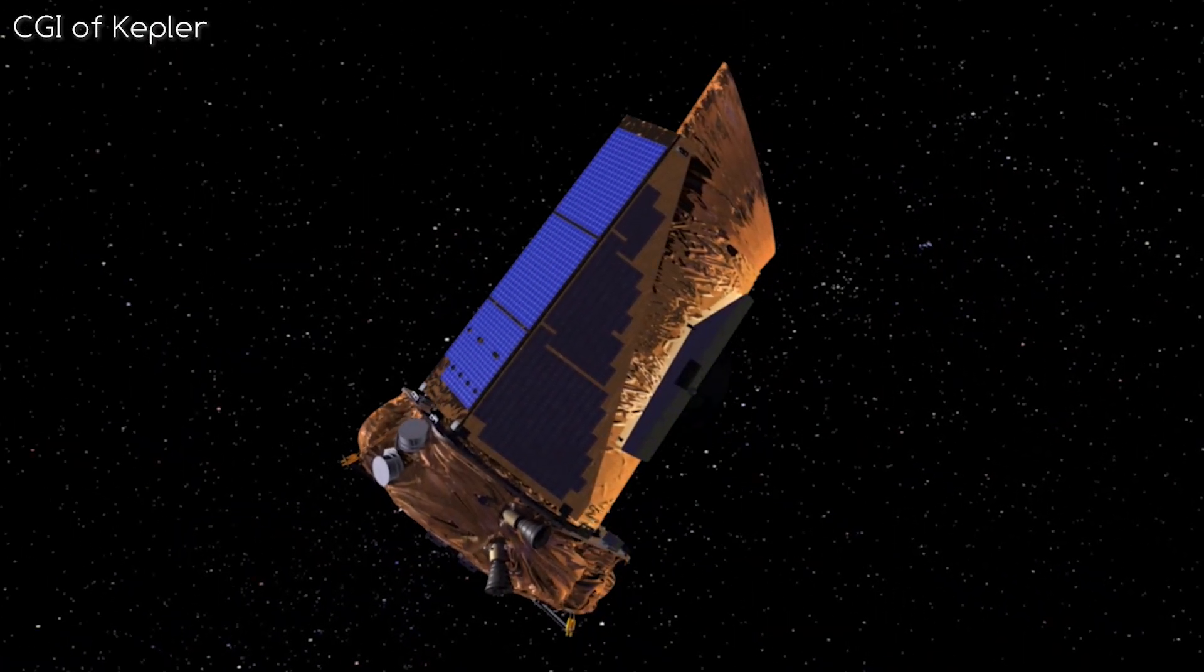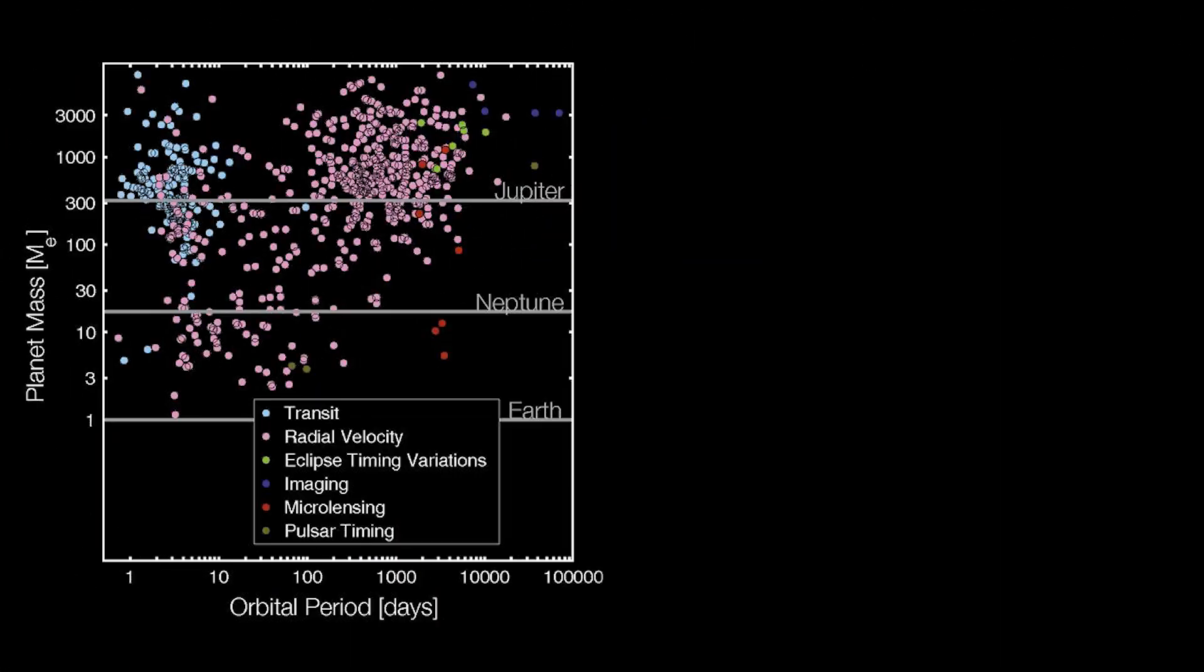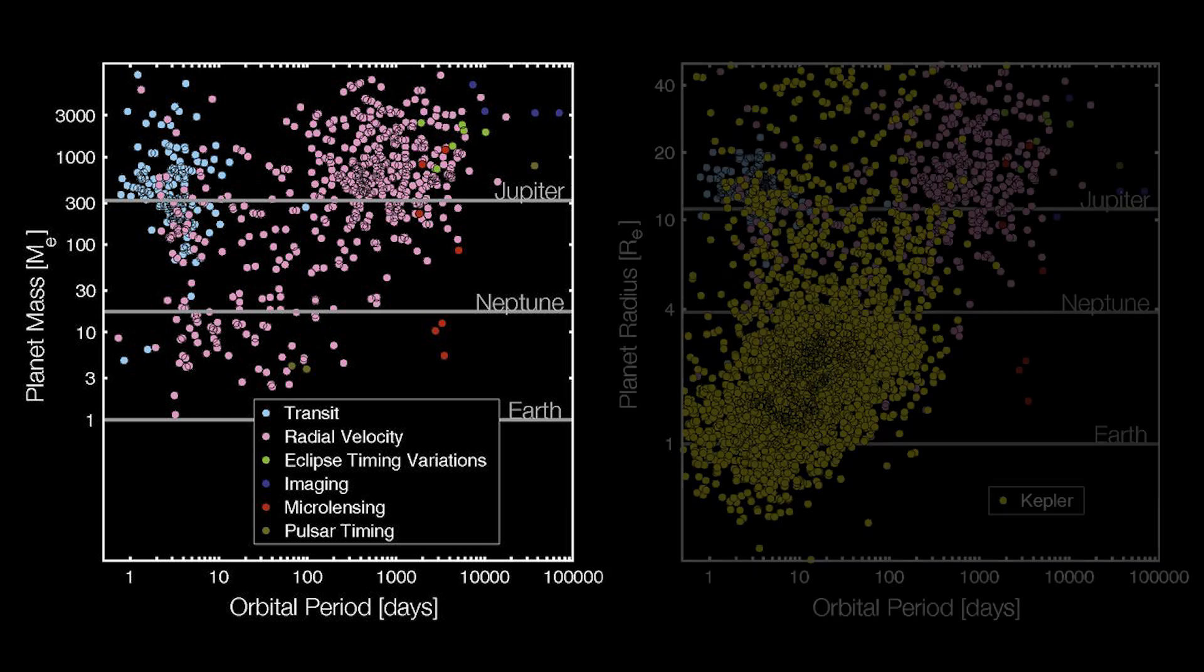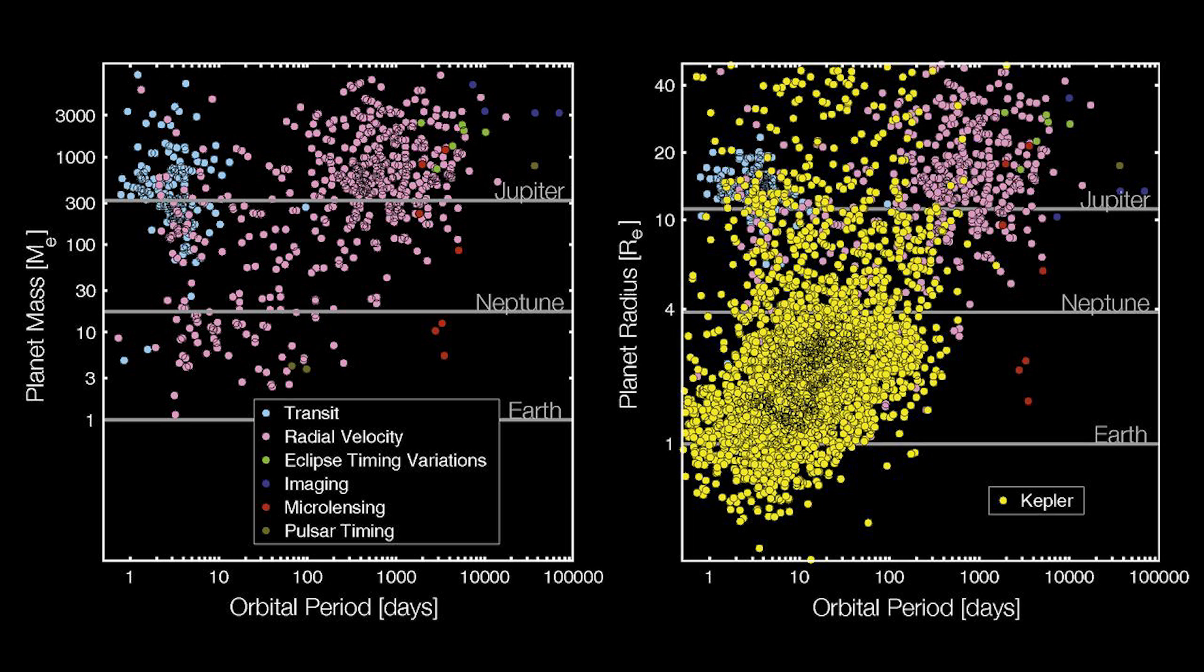Kepler is really good at finding exoplanets. Before Kepler came into operation, these were the exoplanets we knew about. As you can see, most of them are many times the size of Jupiter. Since Kepler came into operation, we have discovered and confirmed the existence of thousands of exoplanets, with thousands more still unconfirmed.